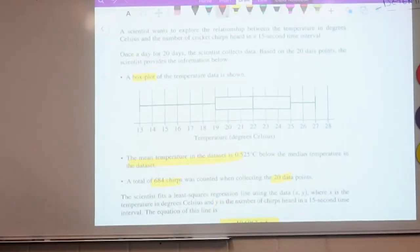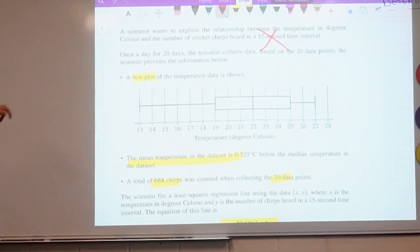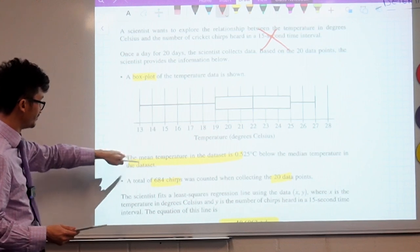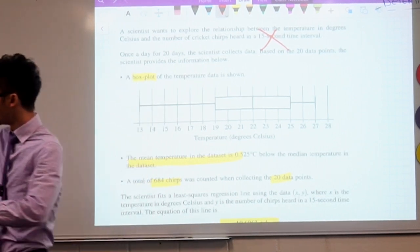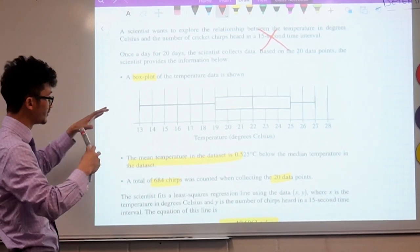Okay, first things first, this 15 second time interval, that's just like flavor text. You don't actually really need that to solve the problem. The box plot here, what that's used for is, well, it's used for this second dot point here. It says the mean temperature in the data set is 0.525 degrees below the median temperature in the data set. Remember how I said that there's two variables going on? There's the temperature, they say that that's the x, and there's the chirps, which is the y.